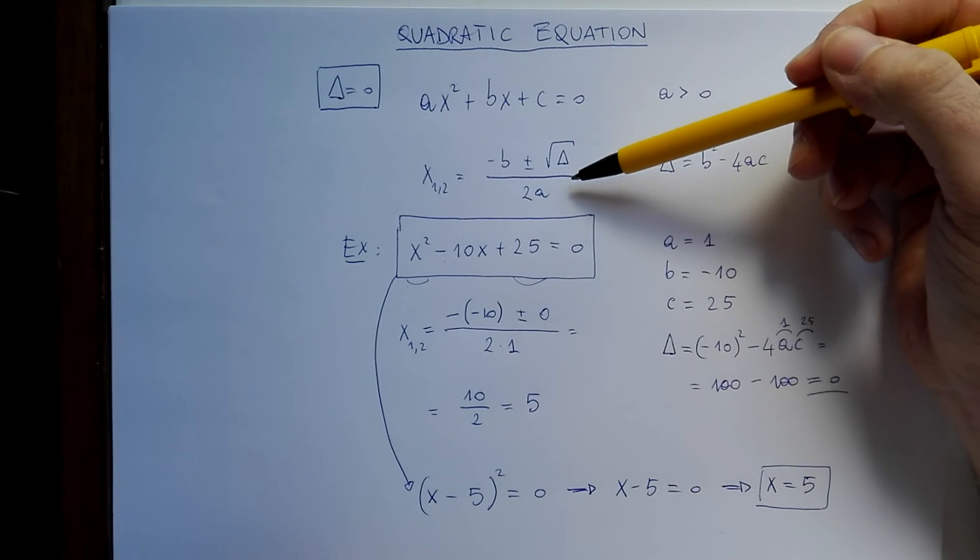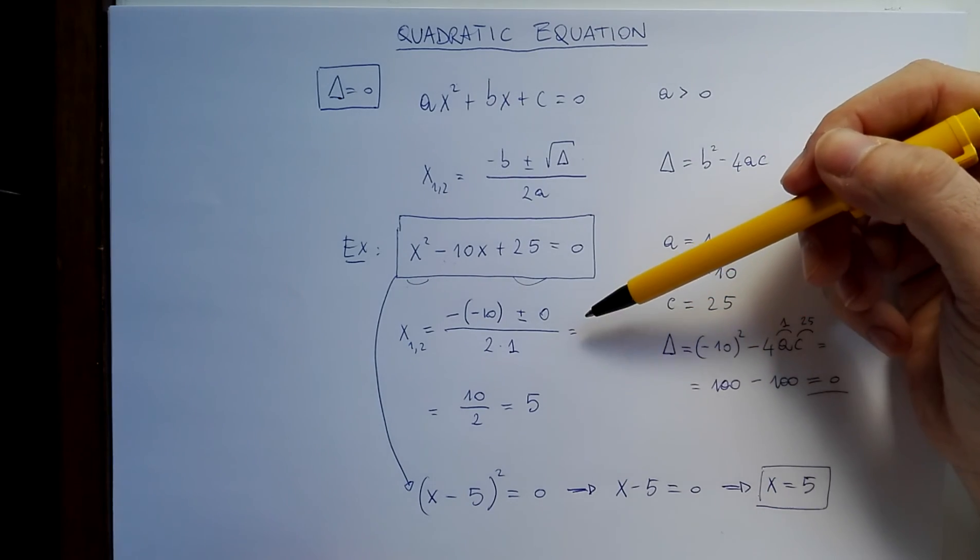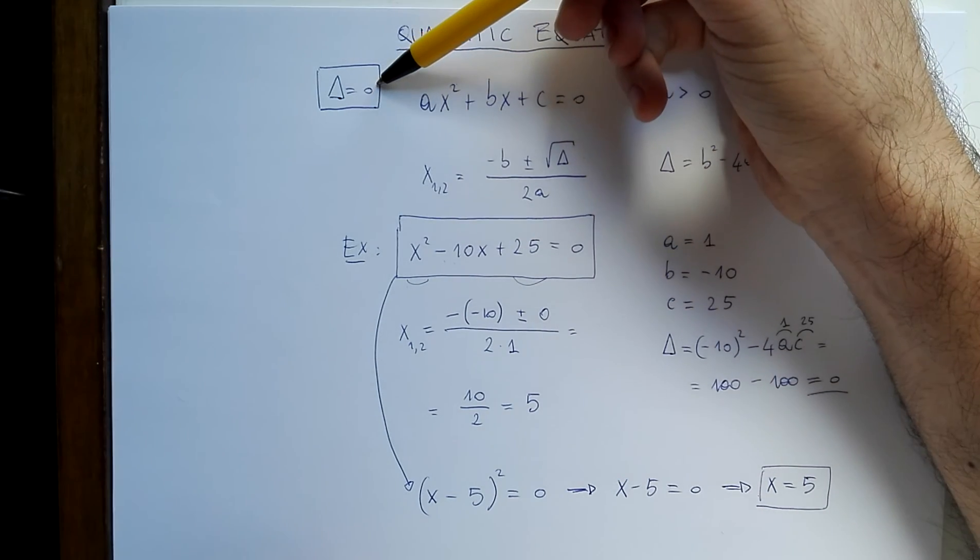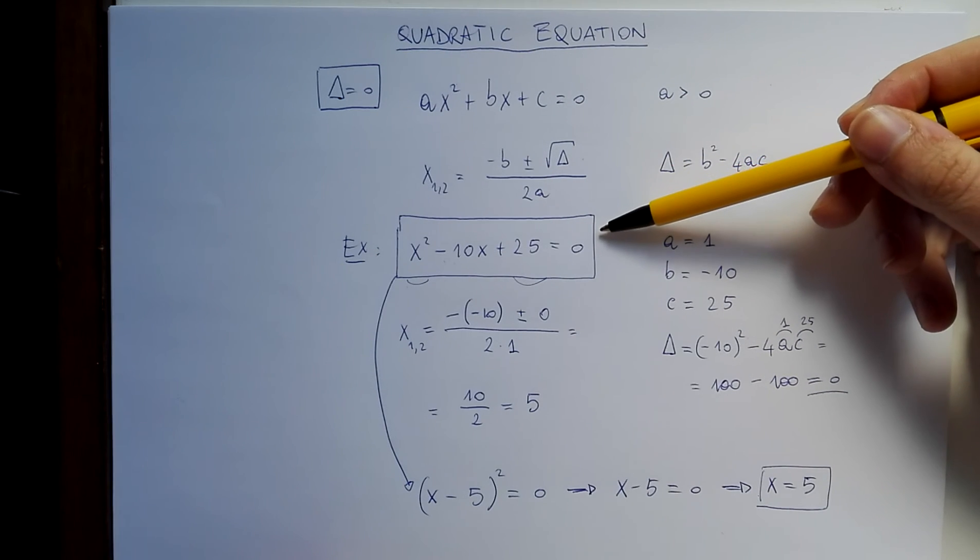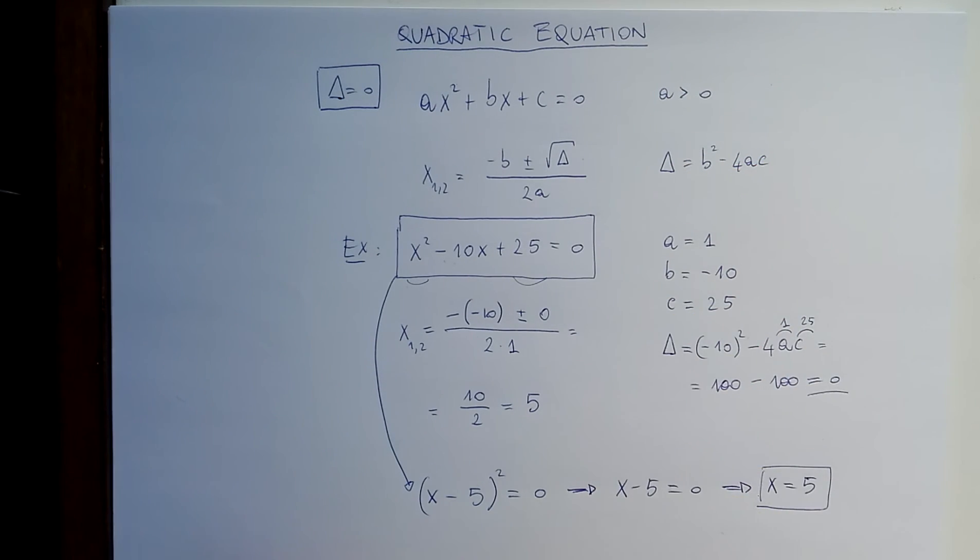So we can either apply the formula, or realize that all the times that delta is zero, the equation is a square. So we write it as a square and we get immediately the solution.